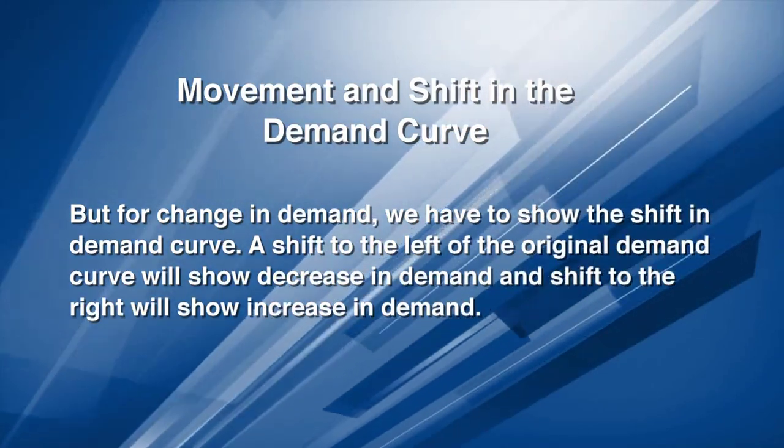A shift in the demand curve implies a shift to the left or a shift to the right. Suppose the price of a commodity is constant and at that price a consumer demands a certain quantity. Now suddenly if there is an increase in the income of the consumer, even if price is constant, the consumer can create more demand for the commodity, and as a result the demand curve will shift rightward. The reverse is the case if there is a fall in income — when price is constant, there may be a shift in the demand curve.